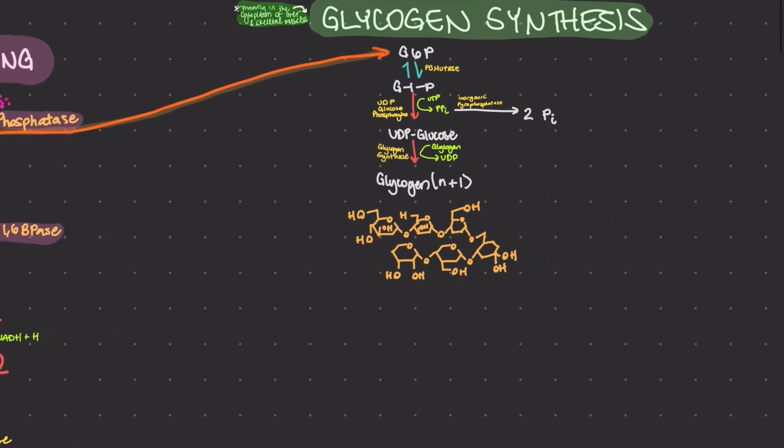Now, let's talk about glycogen degradation. Glycogen degradation, also known as glycogenolysis, is the process of breaking down glycogen to release glucose units for energy. This process primarily occurs in the liver and muscle cells.